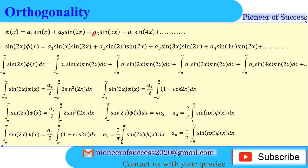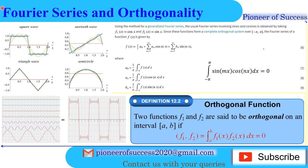Coming to Fourier series — so far we have learnt that any function can be expressed as a Fourier series. Suppose you have a square wave: according to Fourier's theory, it can be expressed as a summation of an infinite series. You have multiple sine or cosine series that sum up and give you this particular waveform. The contributory sine waves are shown here, and similarly for a sawtooth wave you can take a summation of multiple functions.